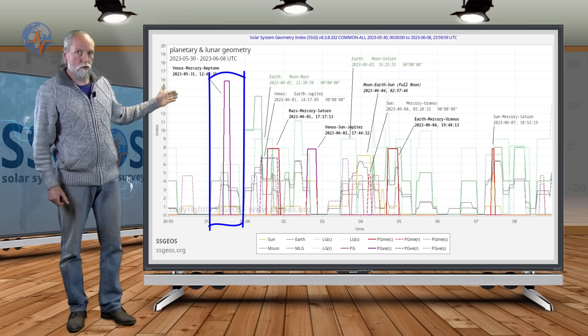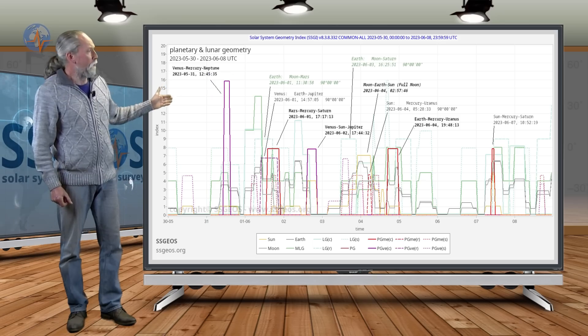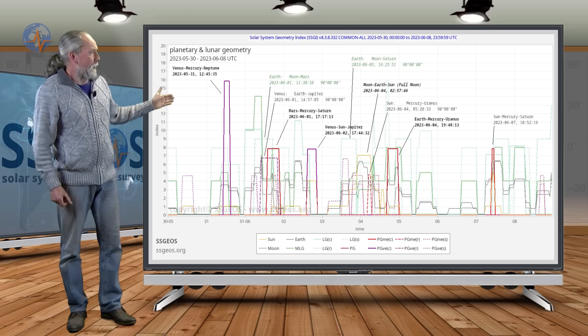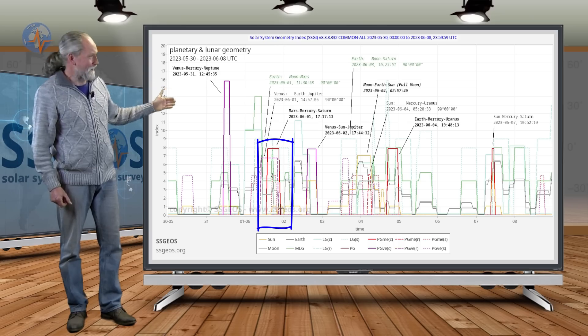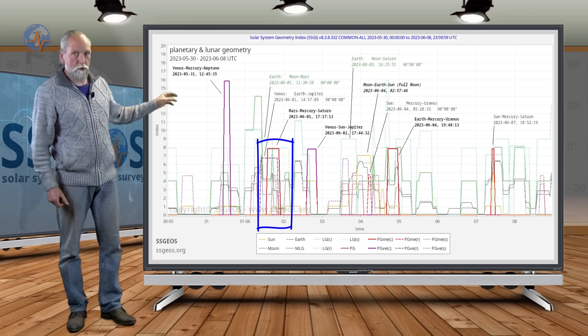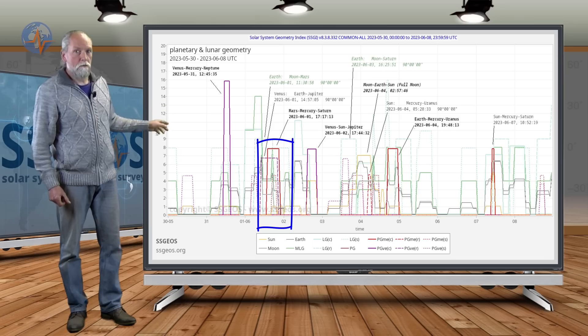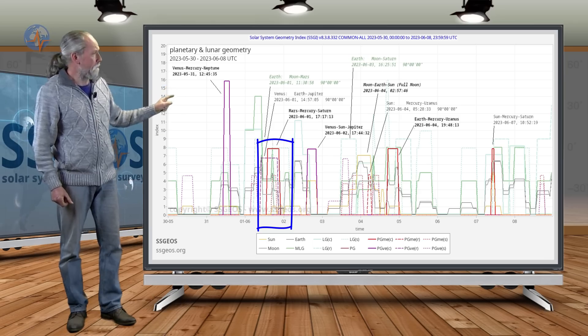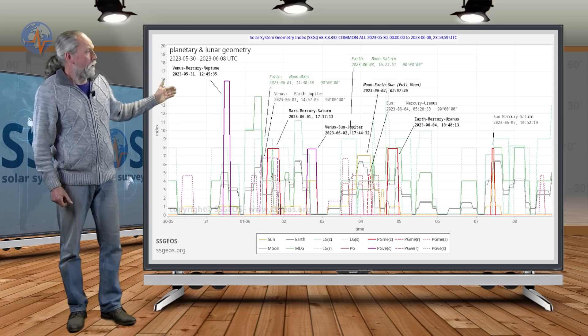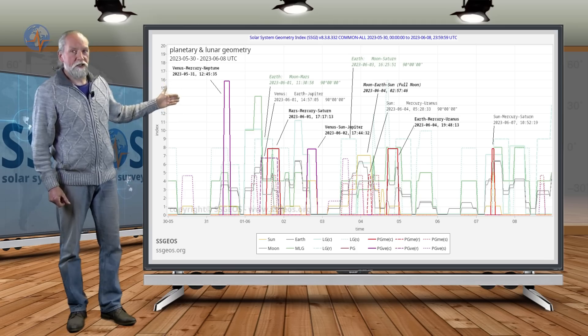It will be followed a day later by Mars, Mercury, and Saturn, also a critical conjunction where Mercury is between the planets Mars and Saturn—really critical. And then another day later, that will be on the 2nd of June.